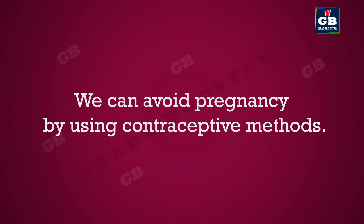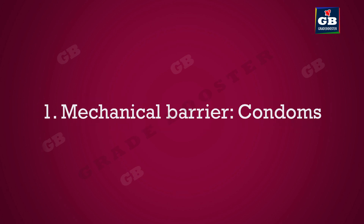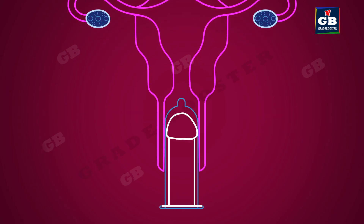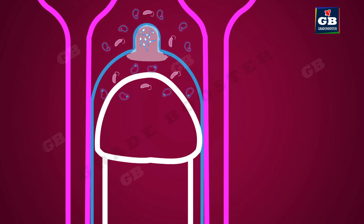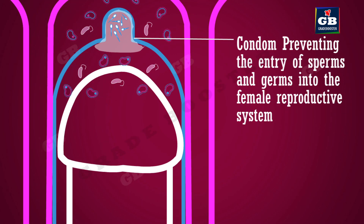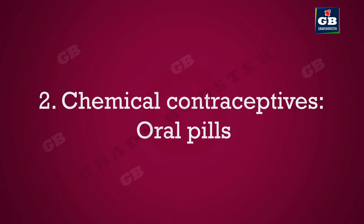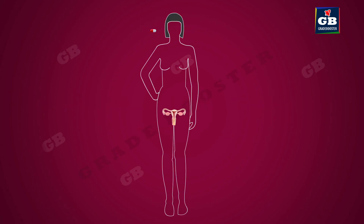Contraceptive method 1: mechanical barriers — for example, condoms. By using male or female condoms, one can avoid pregnancy. Condoms act as a barrier and prevent the entry of sperms into the female reproductive system. Contraceptive method 2: chemical contraceptives — for example, oral pills.